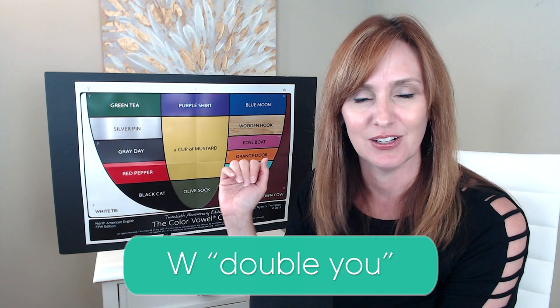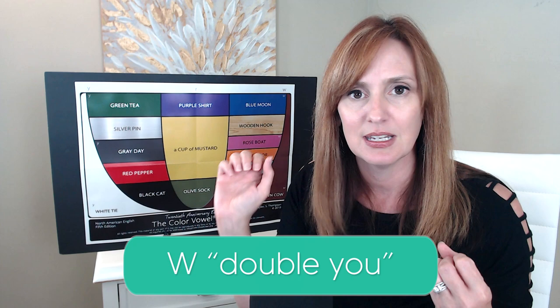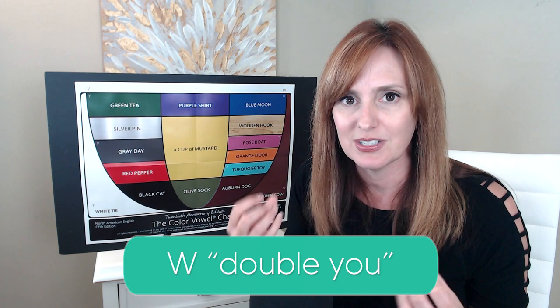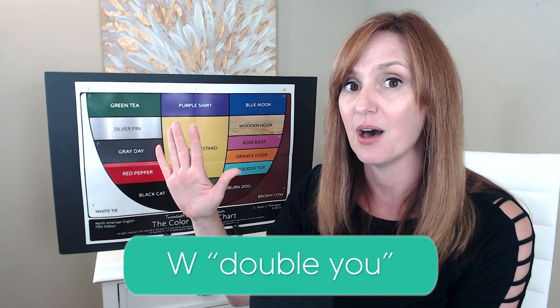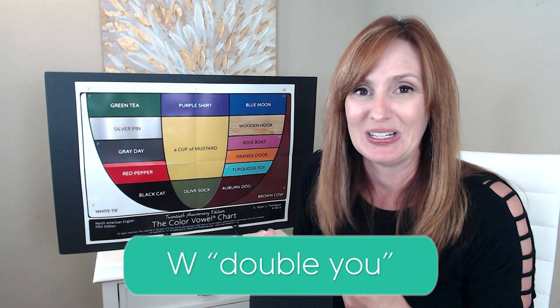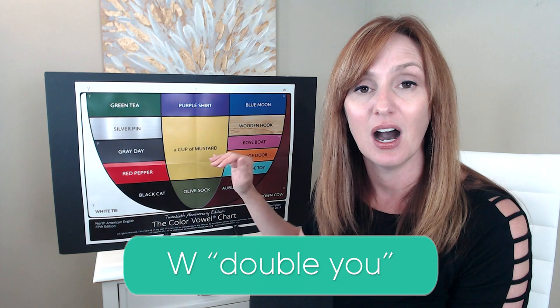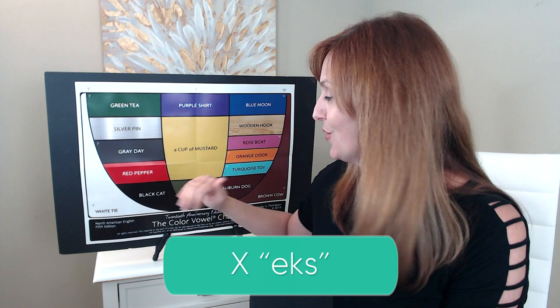W. The name of this letter is like two different words. We start with the word 'double' — as in like triple, double, single — cup of mustard, double. That second syllable is very quick, stressing our first syllable: double. Then the word 'you' — you and me. W. A cup of mustard, W.